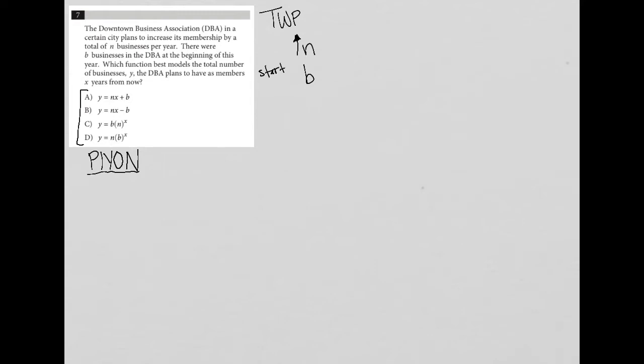All right, and I'm already feeling like this is adding up. I see x here, I see y here. I'm going to just jump straight to this plug in your own number. So here's how this process works. I'm going to make up a number for the variables that I've been given. So the DBA wants to increase its total membership by a total of n businesses per year, I'm going to just say n is 100. We want to increase the number of memberships by 100 businesses per year.